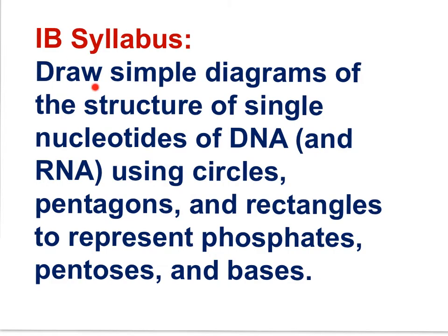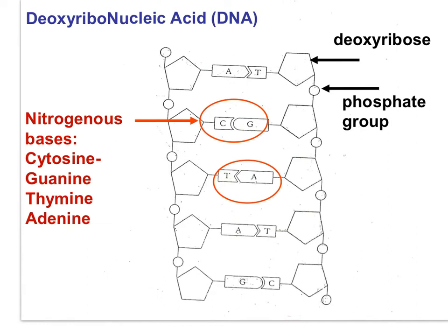Could you draw a short segment of a DNA molecule showing the structure of single nucleotides using circles, pentagons, and rectangles to represent phosphates, pentose sugars, and bases? In this image, you can see the pentagonal sugars, the circular phosphate, and the base represented as a rectangle. Notice that the purine bases, A and G, are represented as larger structures than the pyrimidine bases, T and C. The purines are two-ring bases, while the pyrimidines are one-ring bases.